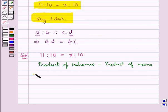And so, in this case, we have product of extremes means product of 11 and 10. So 11 multiplied by 10 is equal to the product of the means, which is 10 and x. So 10 into x. This means 110 is equal to 10x.